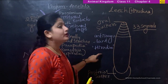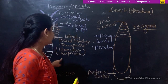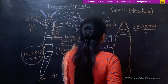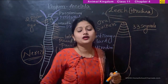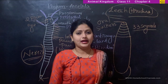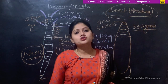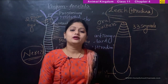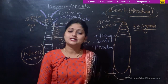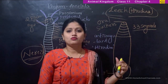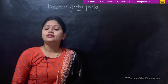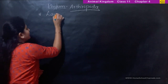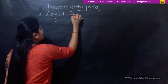So Nereis and the leech are the two examples for Annelida members. Next we move on to Phylum Arthropoda. The most largest phylum compared to all other phylums is Arthropoda — it is the largest phylum.